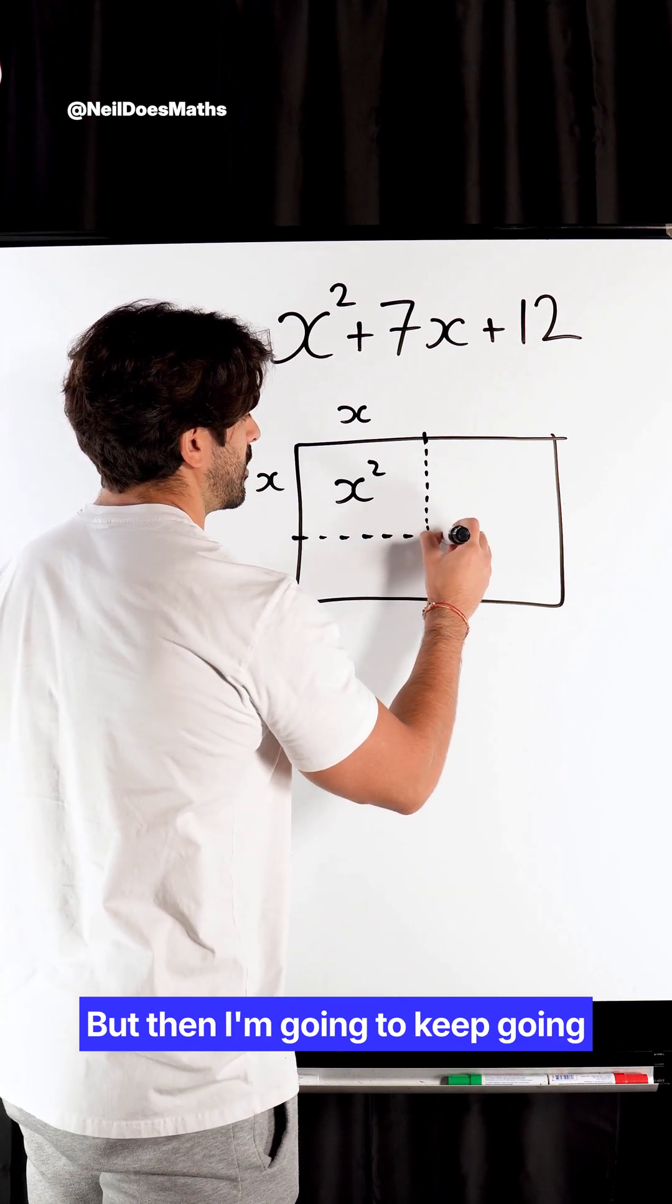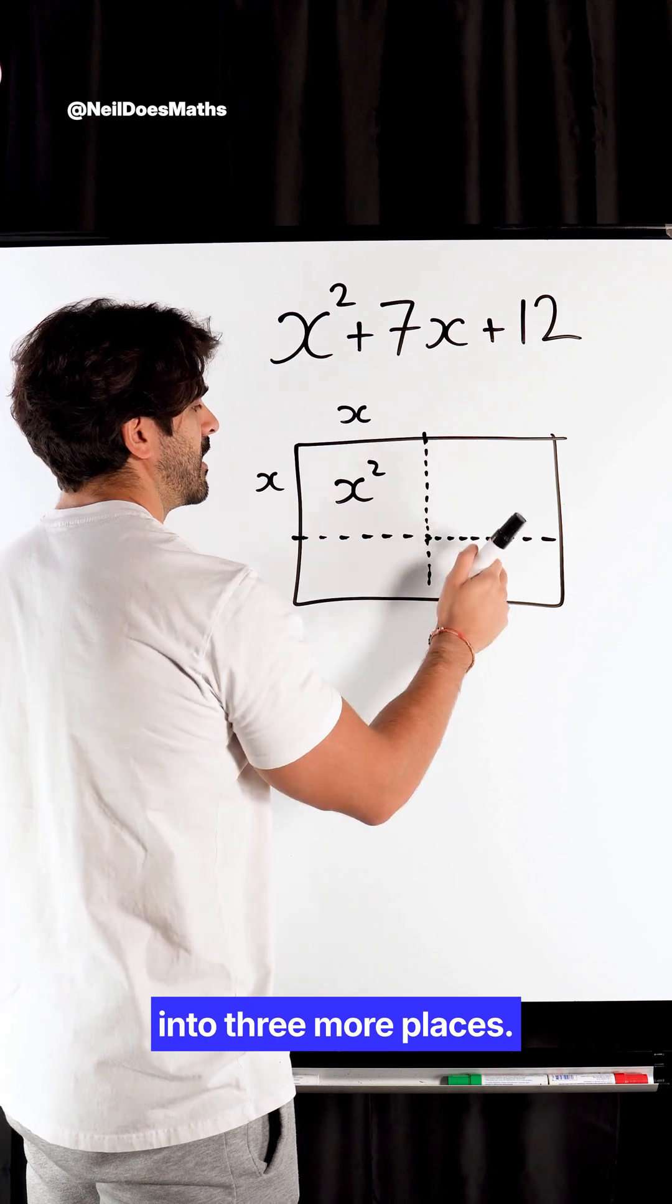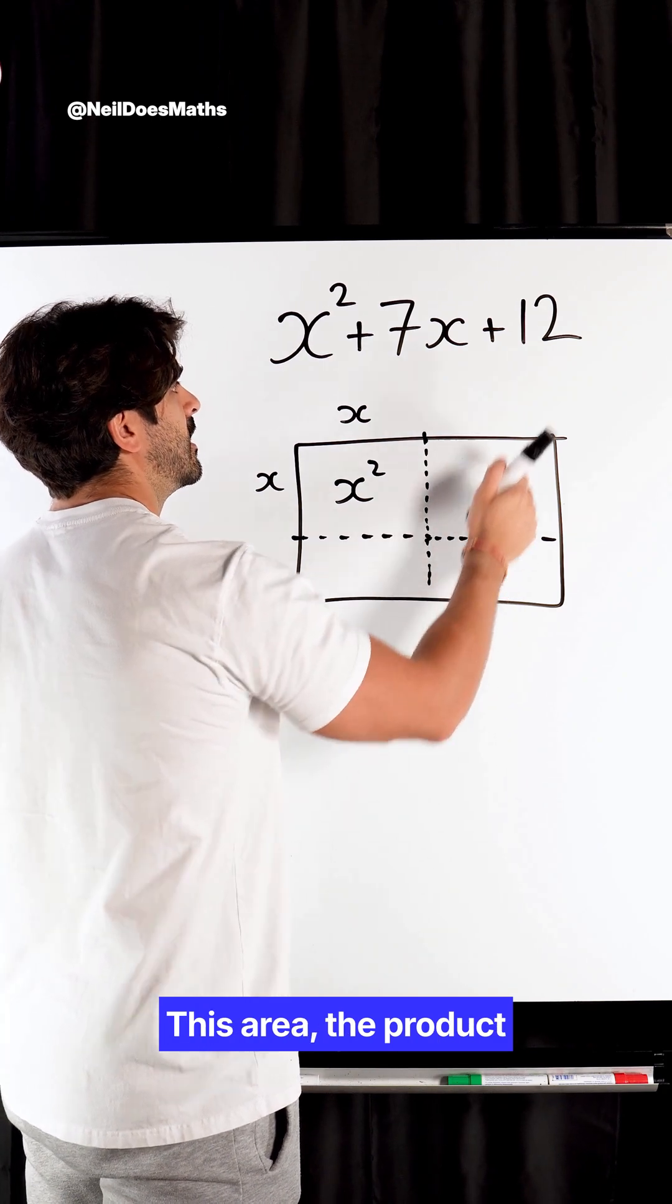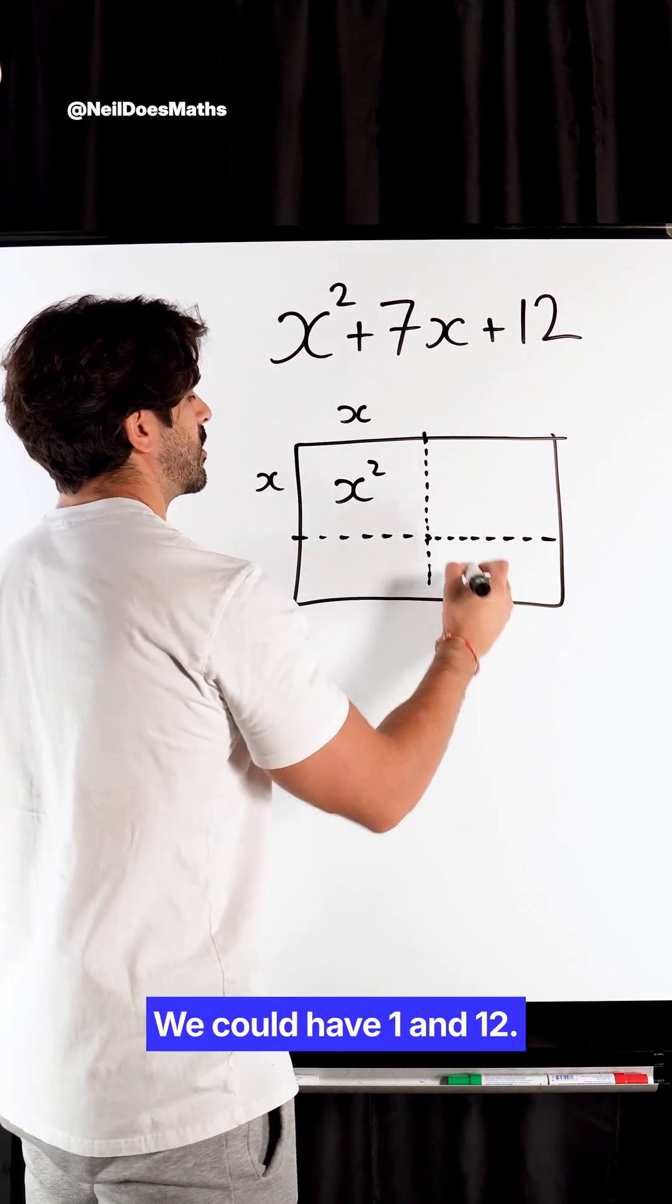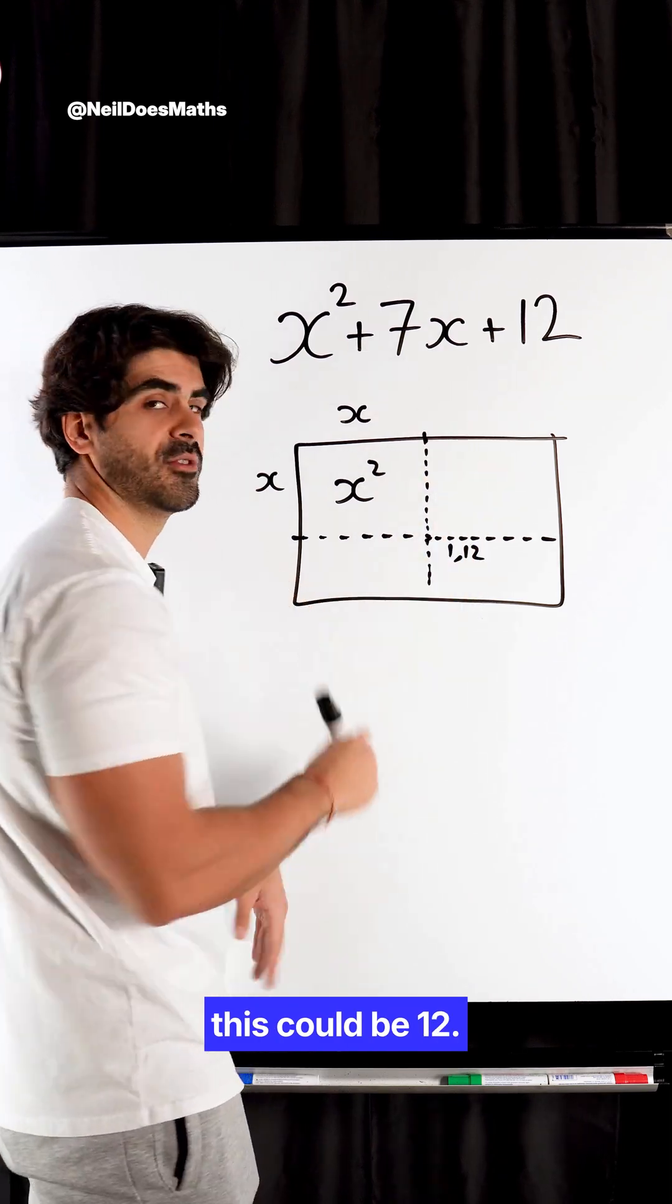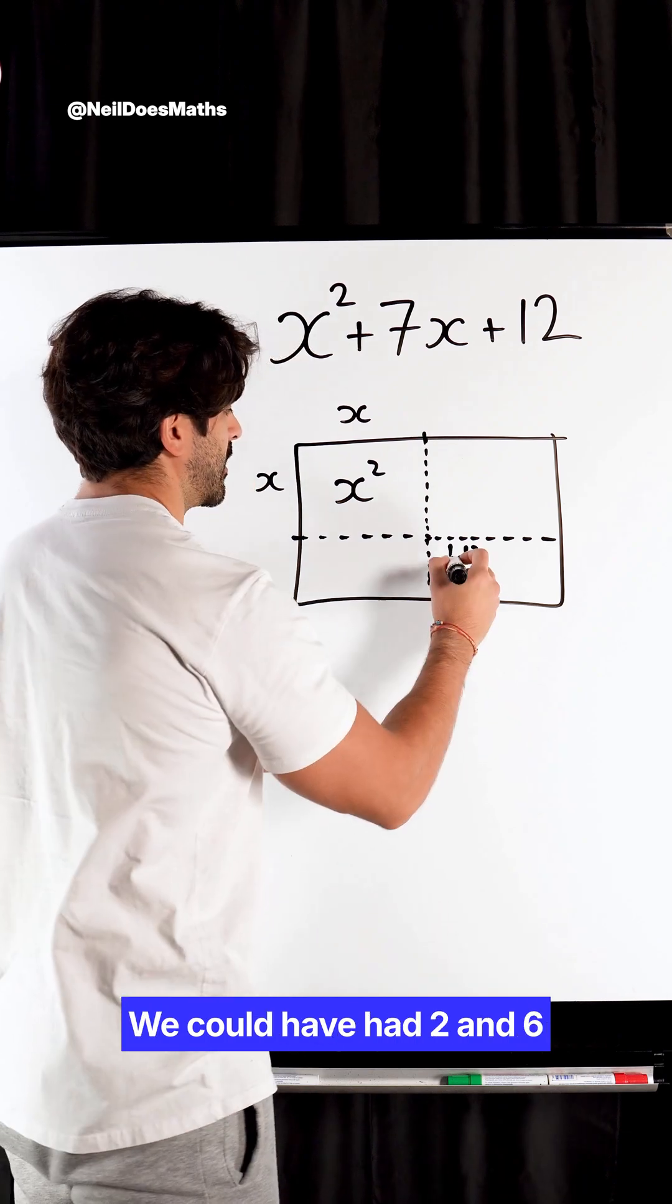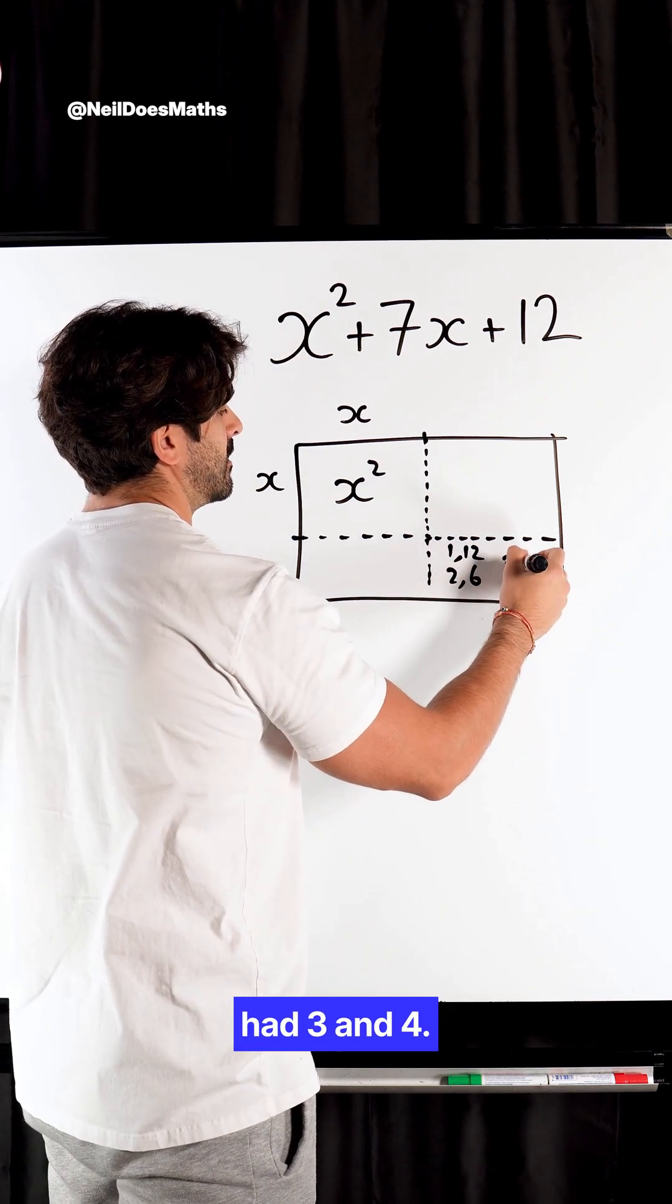But then I'm going to keep going and partition into three more places. This area is the product that gives you 12. Now, there's different products that can give us that. We could have 1 and 12, so this could be 1, this could be 12, obviously not to scale. We could have had 2 and 6, and then we could have had 3 and 4.